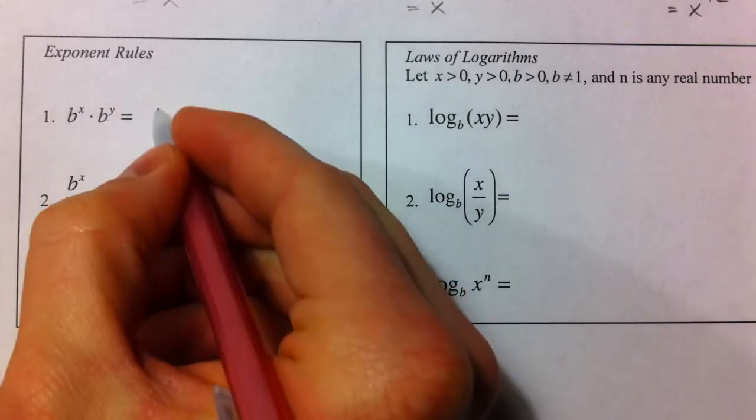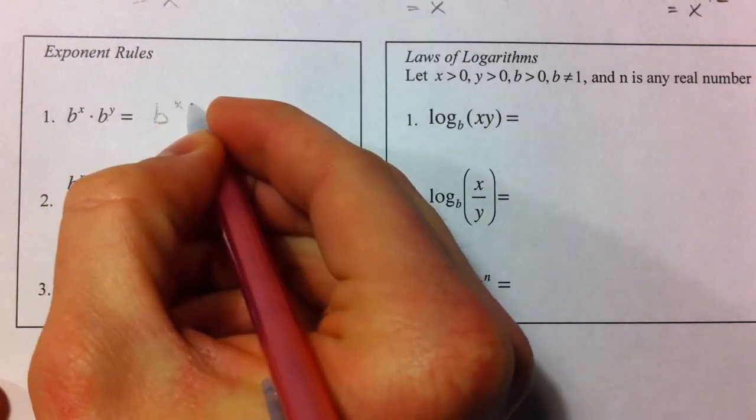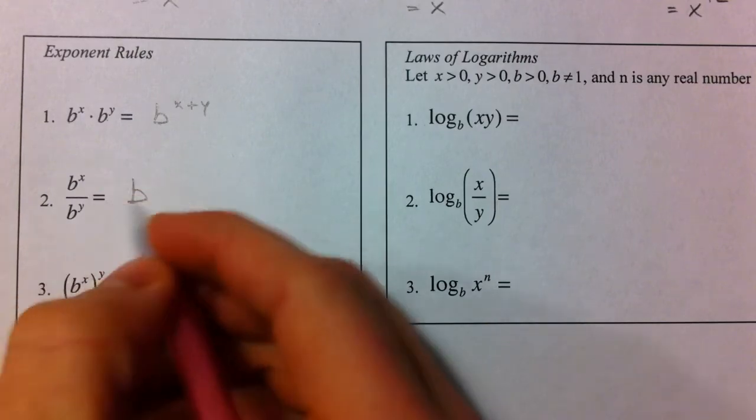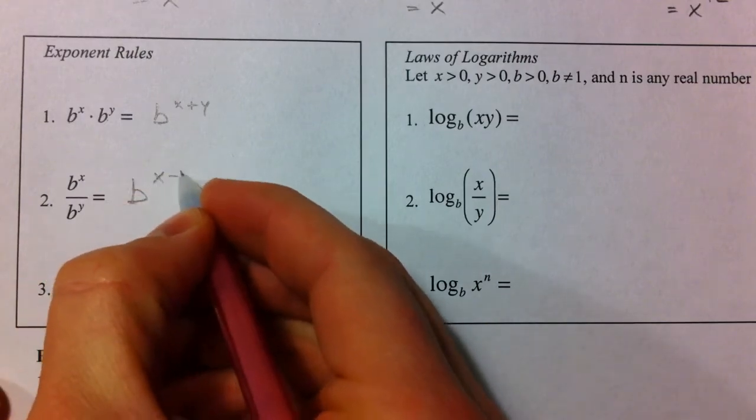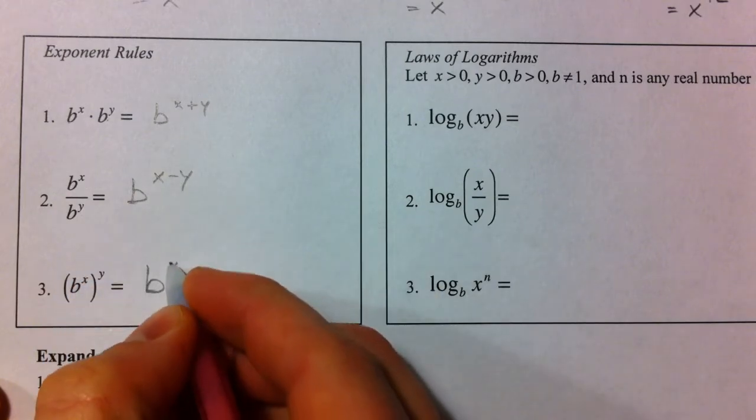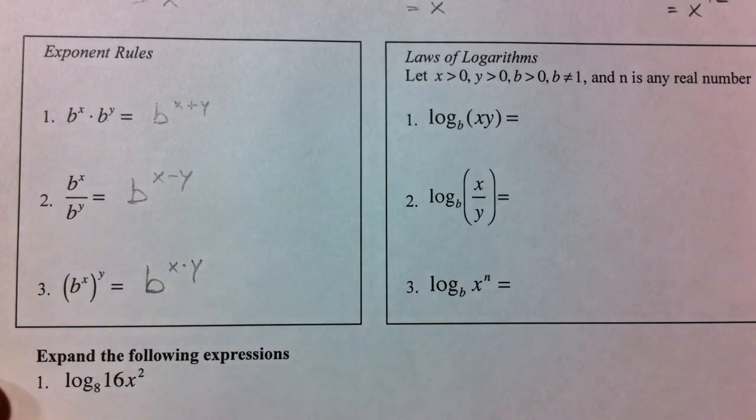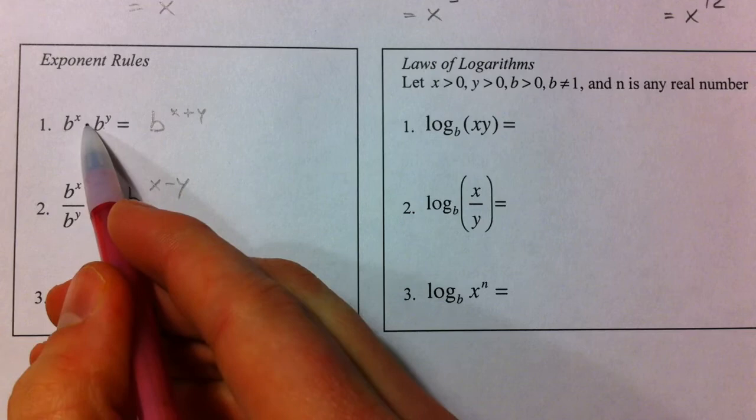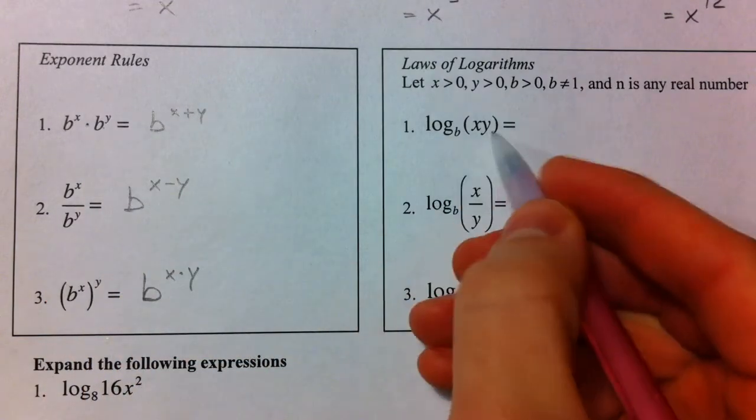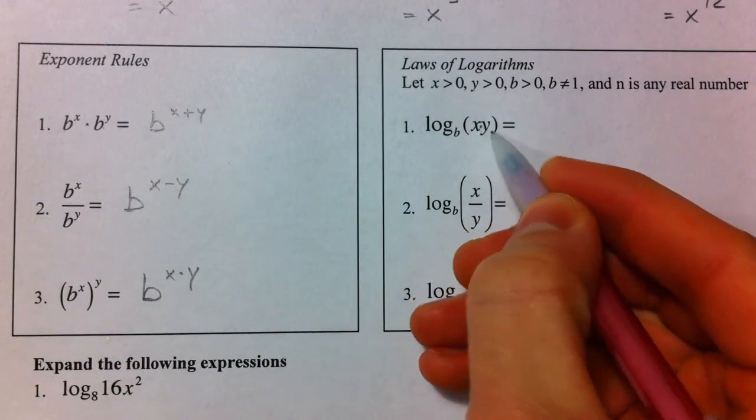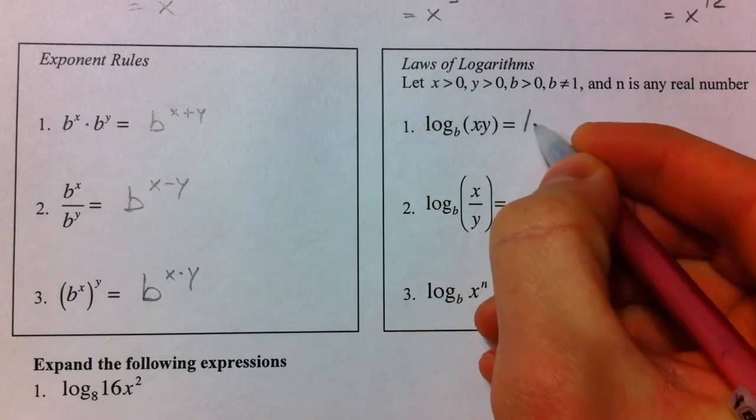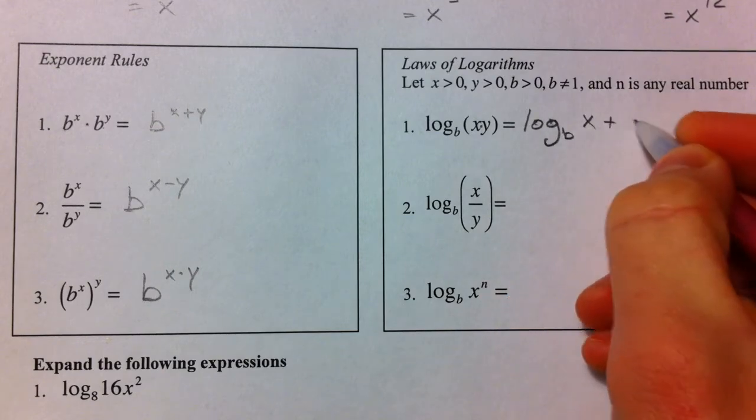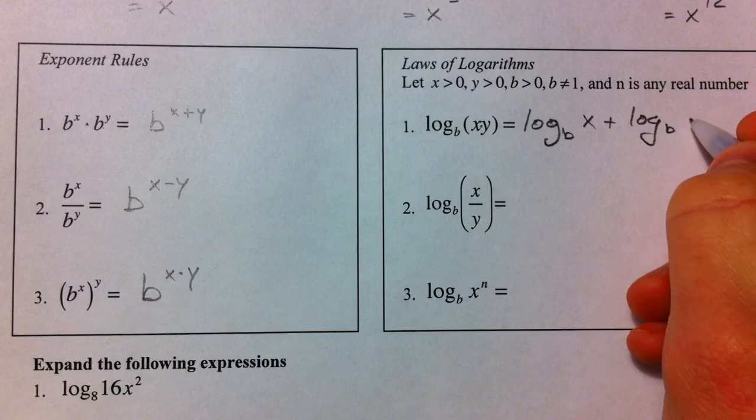So, same base, we can add the exponents like we said, b to the x plus y. Here, we can subtract the exponents, and here, we can multiply. So, it's important that you see if two things are multiplied here, we can change them into added. So, if a log is made up of two parts that are multiplied, we can split them up into a log base b of x plus a log base b of y.